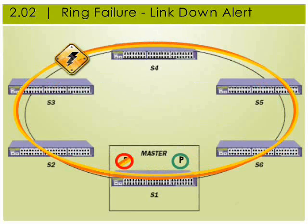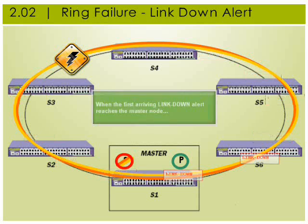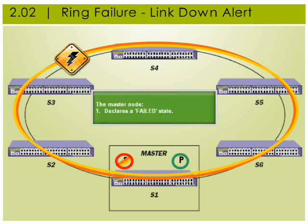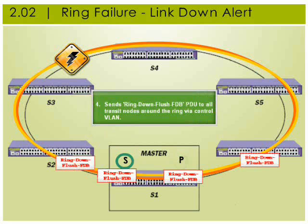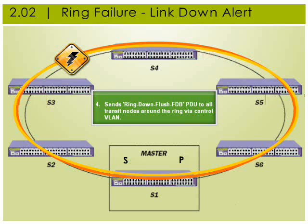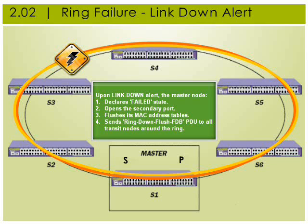When a link or node failure occurs between two nodes, they both immediately send a link down message to the master via the control VLAN. When the master node receives the first arriving link down message, it immediately declares a failed state, then opens the secondary port to protected VLAN traffic so that data can continue to flow on the ring. The master node then flushes its own MAC address tables and sends a ring down flush forwarding database message to all transit nodes. Upon receipt, the transit nodes flush their MAC address tables, and all nodes begin relearning the topology.